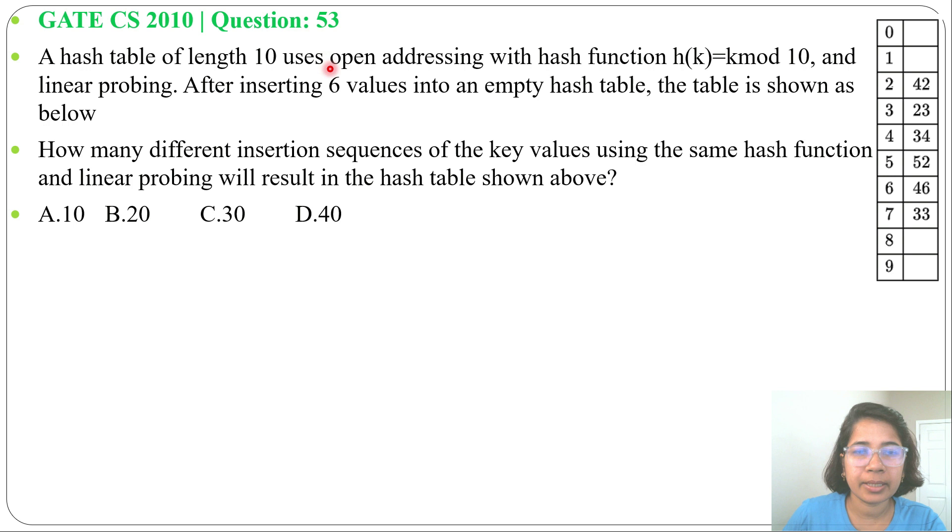A hash table of length 10 uses open addressing with hash function h(k) = k mod 10 and linear probing. After inserting 6 values into the empty hash table, the table is shown as below.